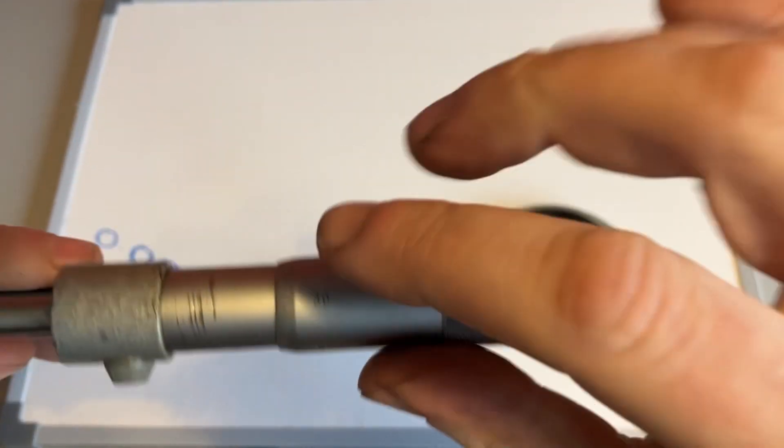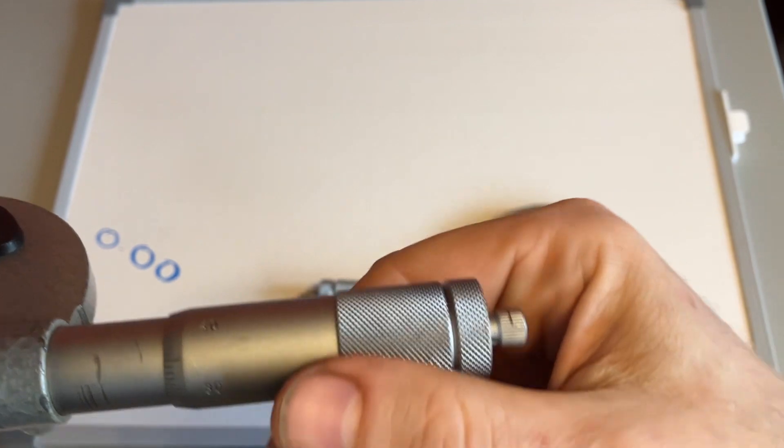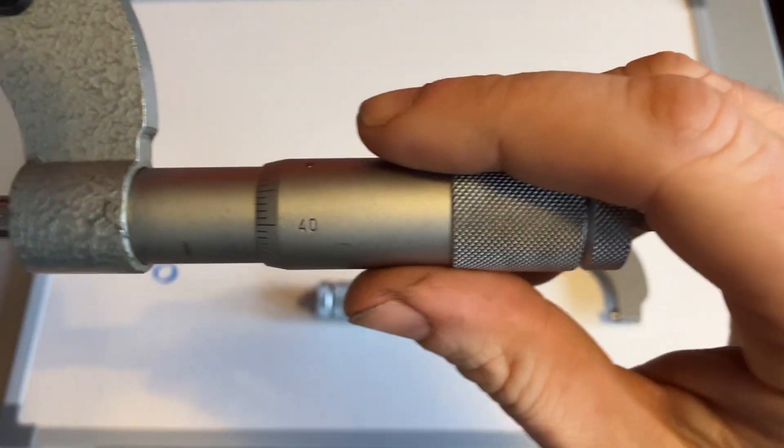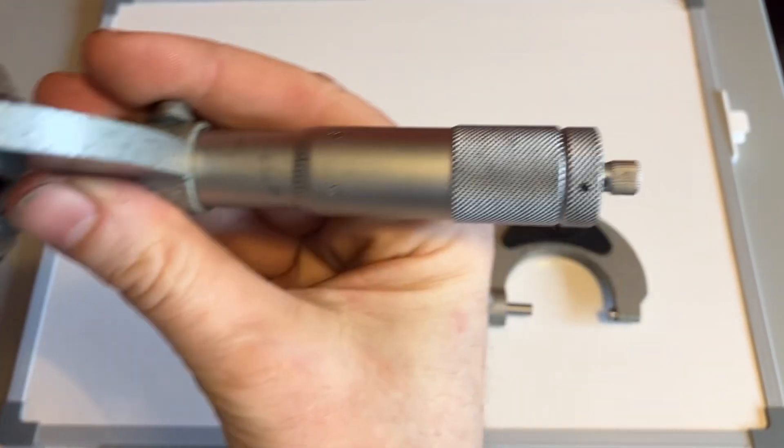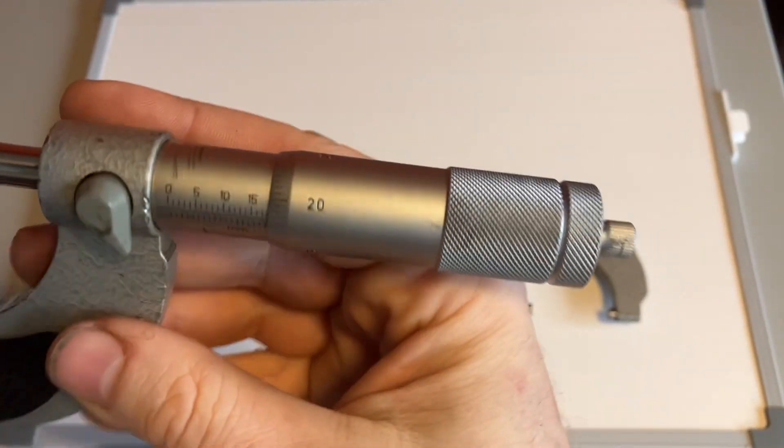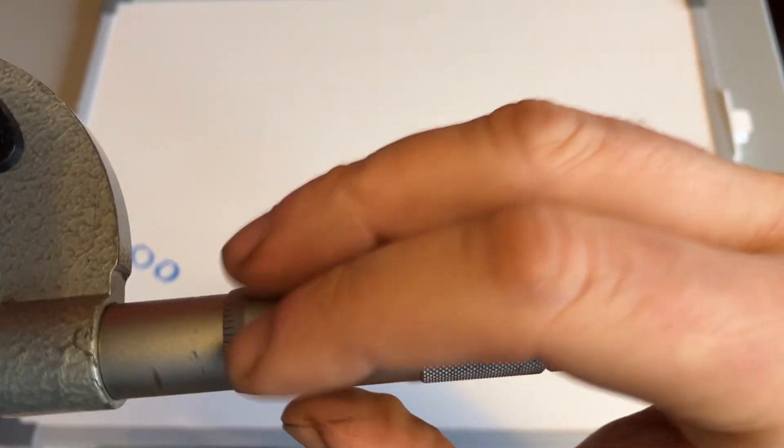And then what you've got here on the thimble here is measurements right round from zero, here right round to 49 and then back to zero again. So there's 50 here as well.